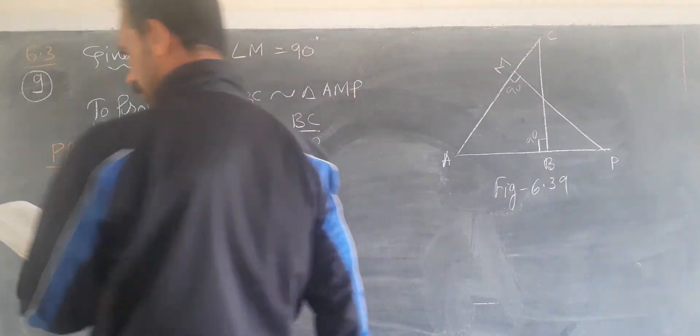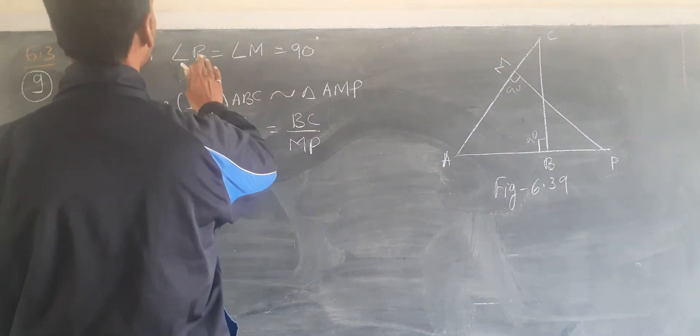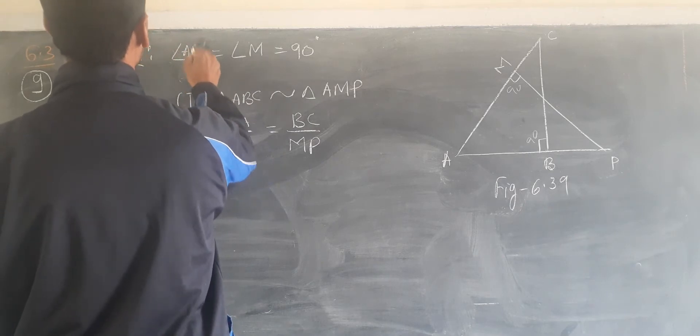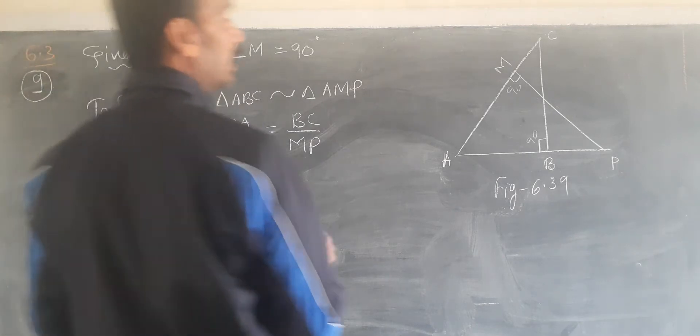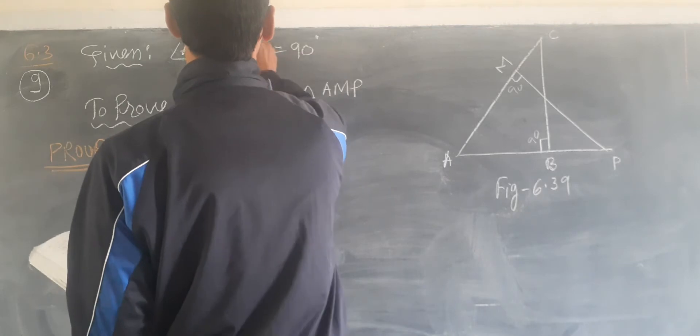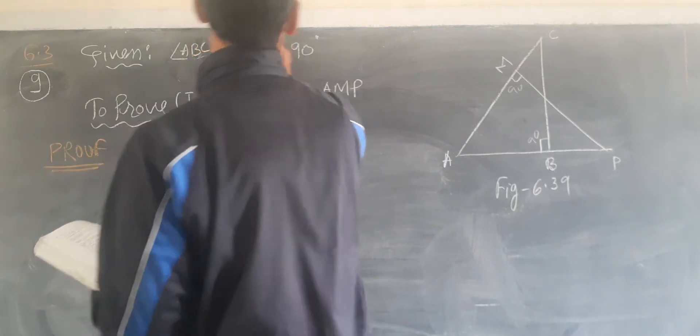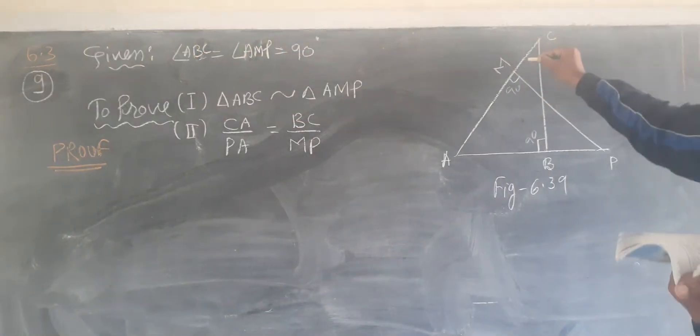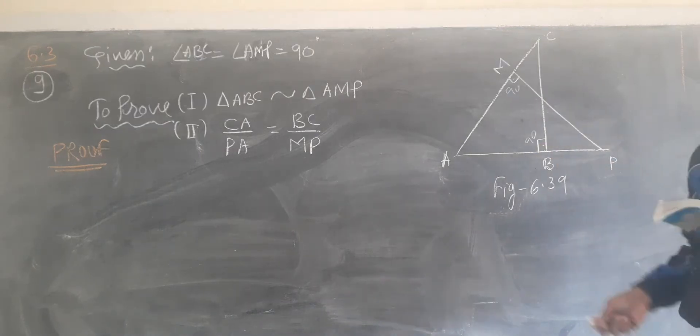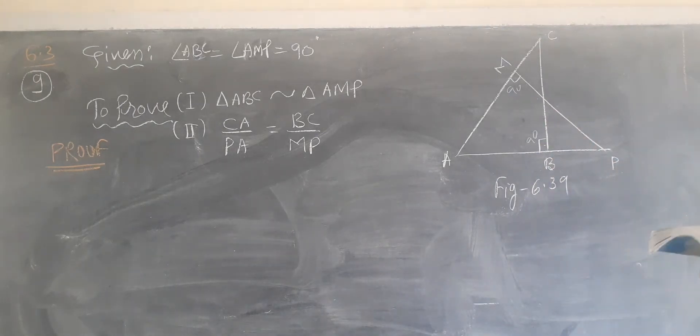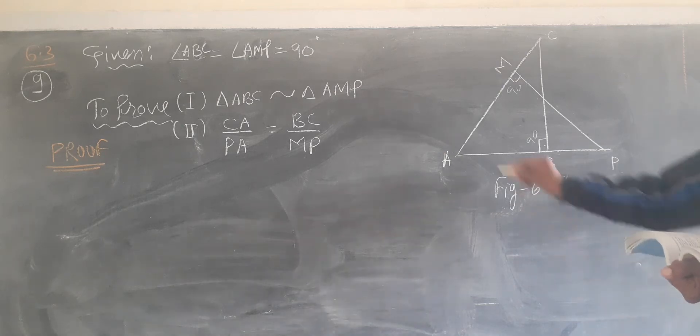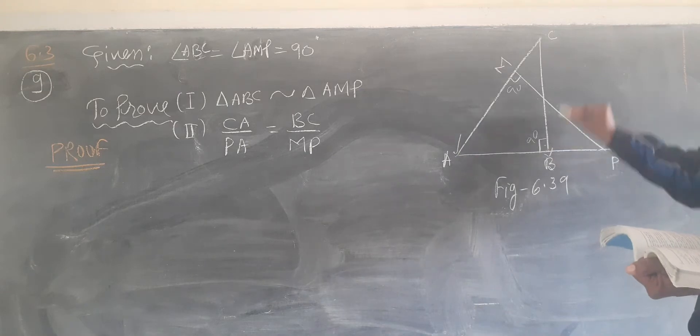To prove that triangle ABC is similar to triangle AMT.